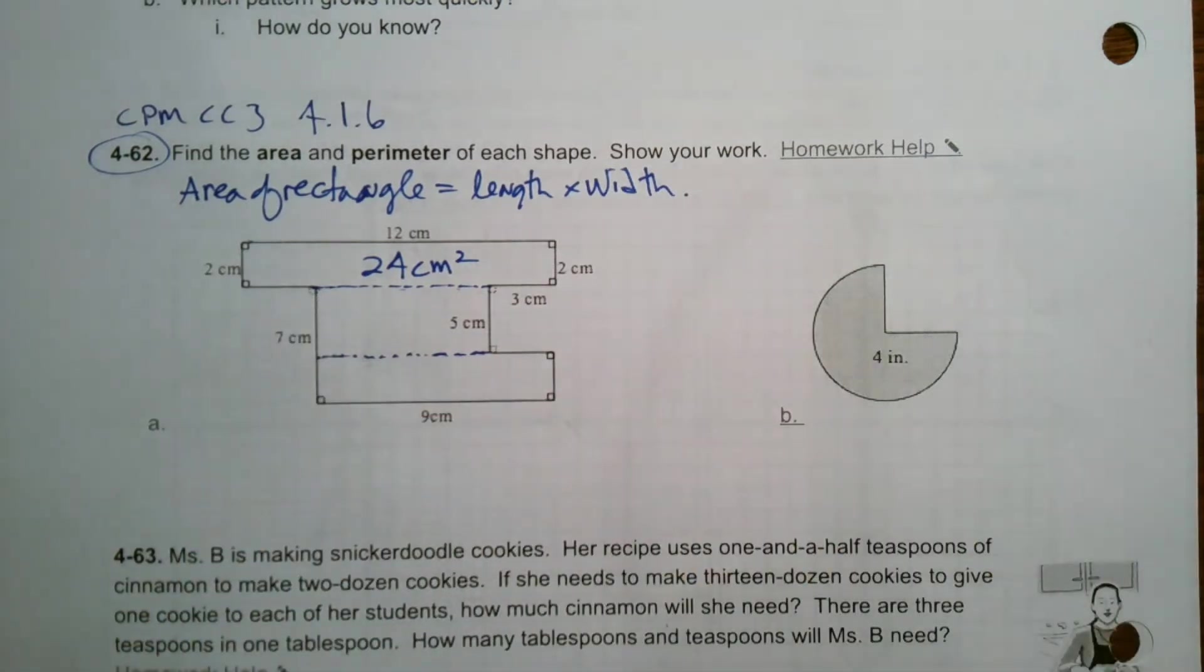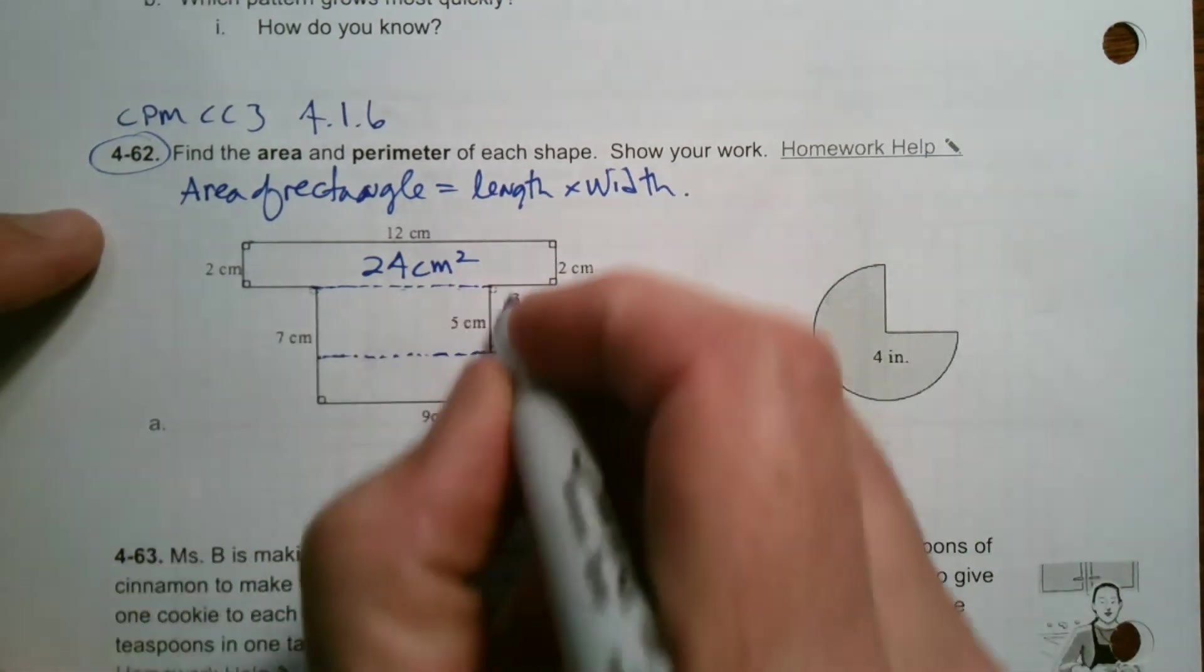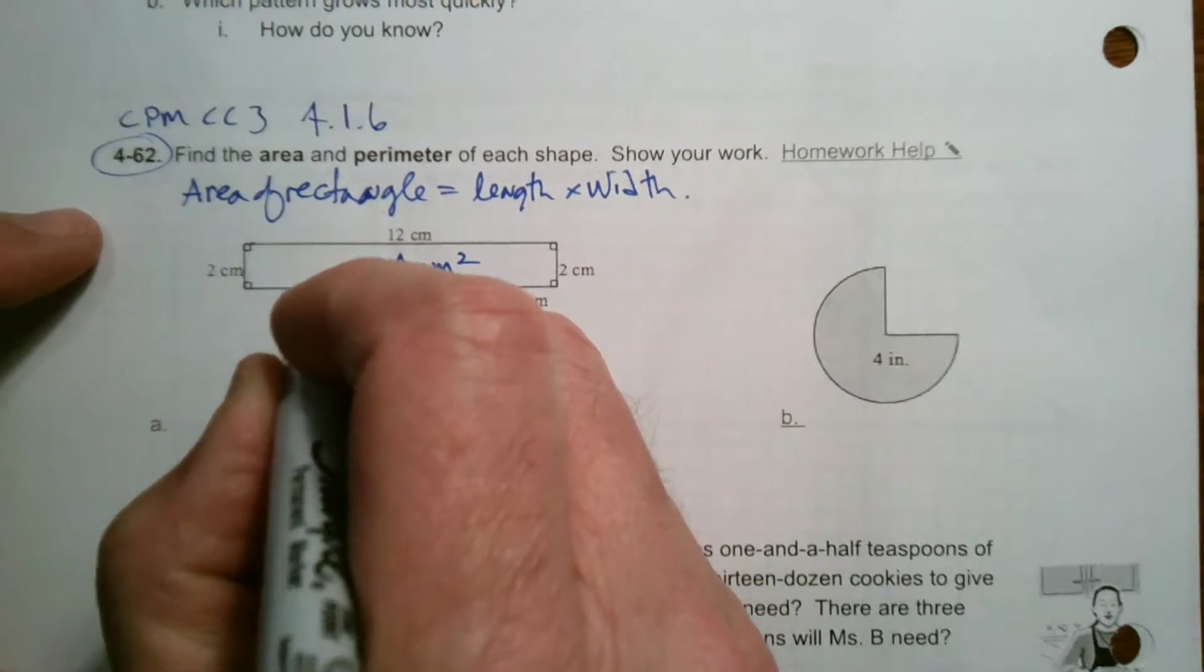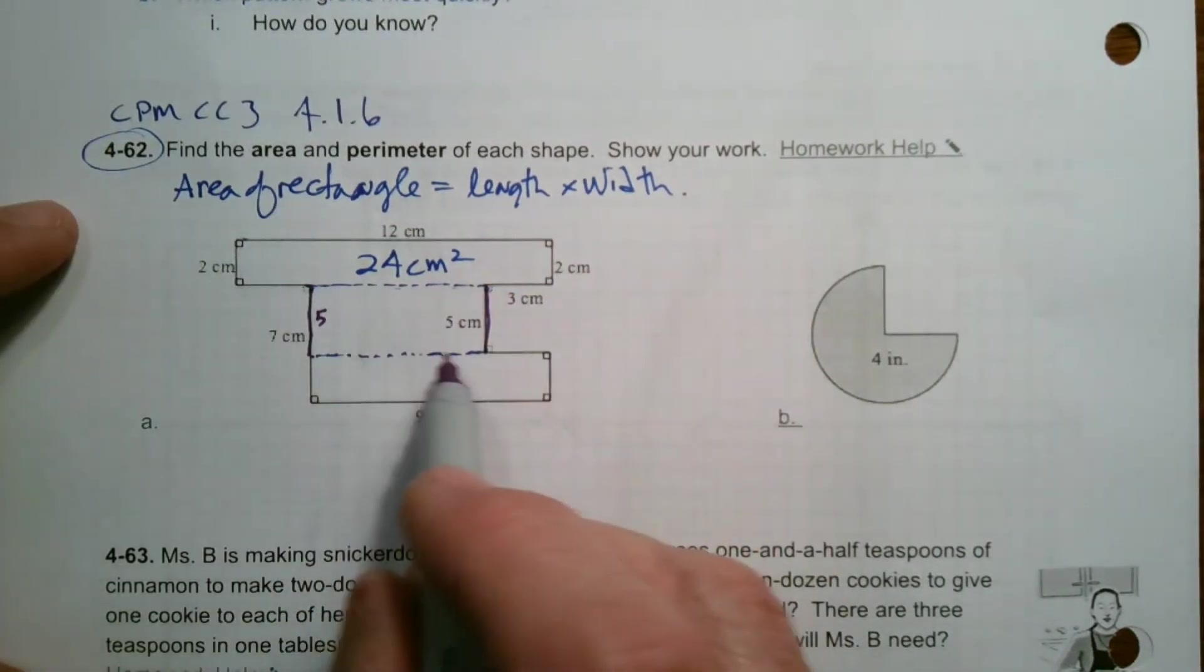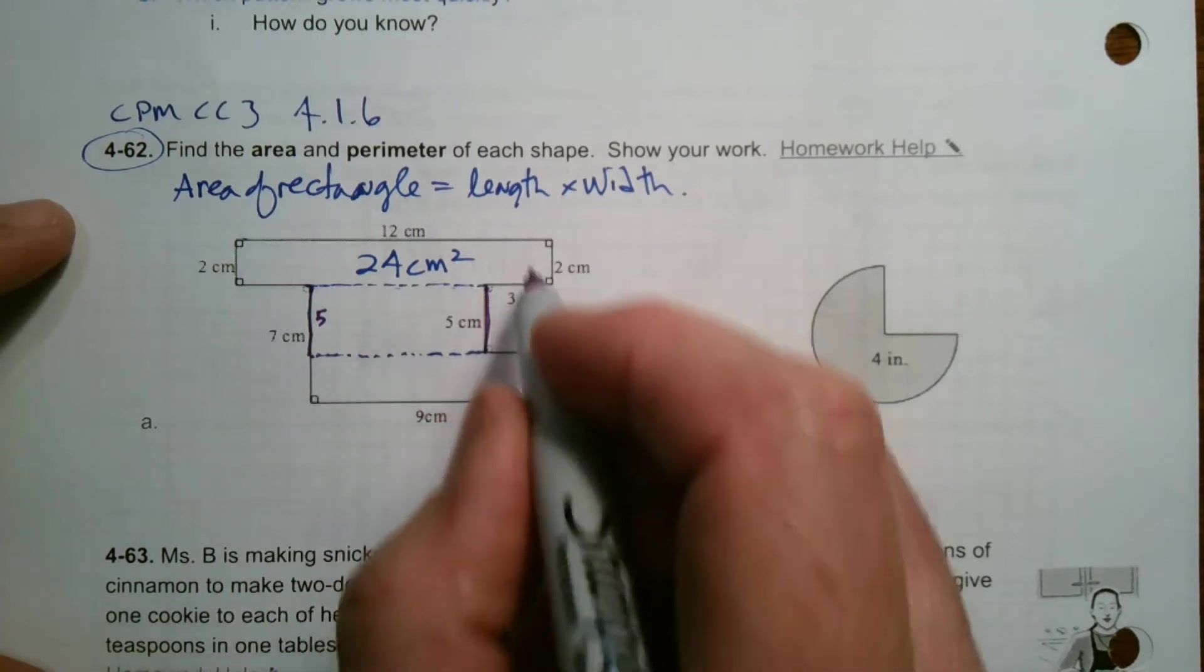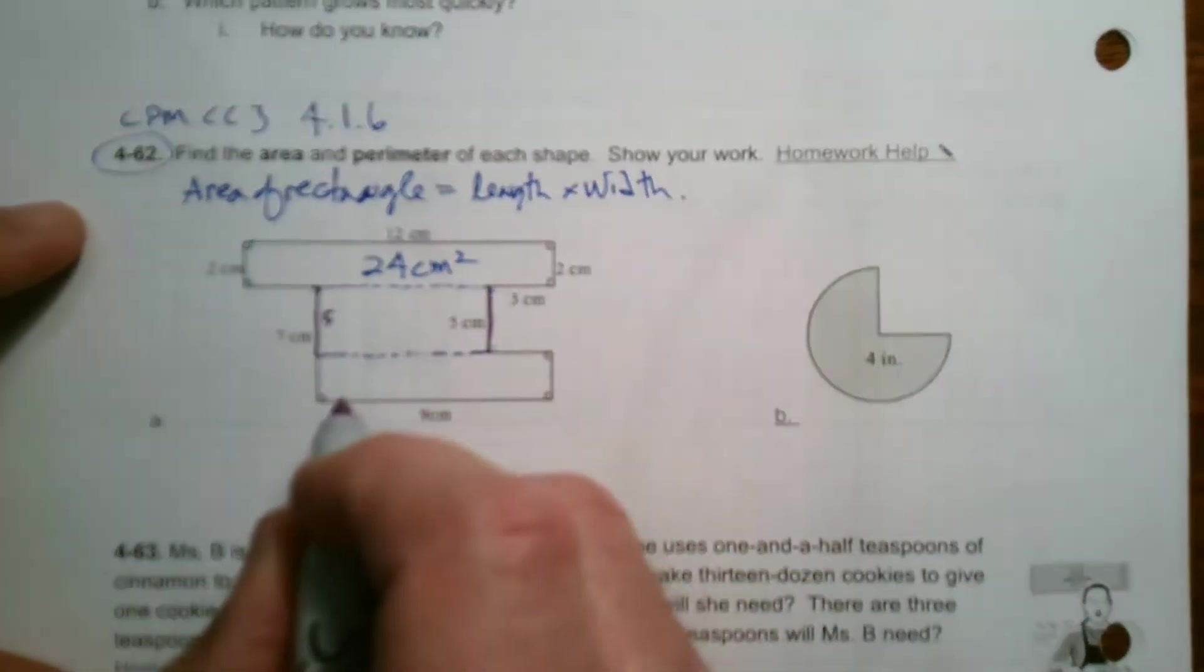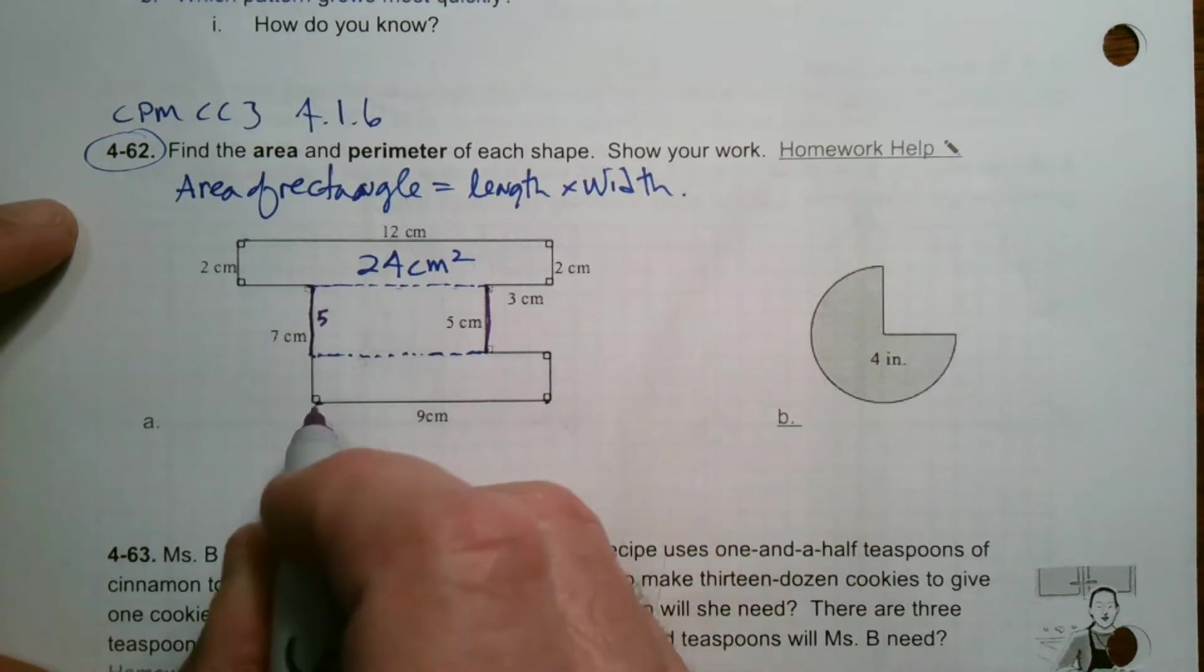This one here inside, I can see that that length is five. So therefore this over here is also five, right? It's a rectangle, opposites are equal. And then now I've got to figure out what is this space? Well, if I look and see that this from here to here is nine, right?